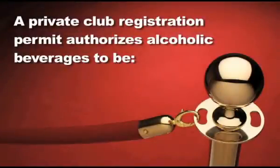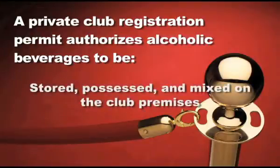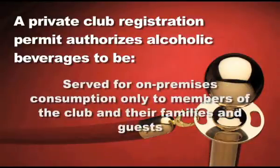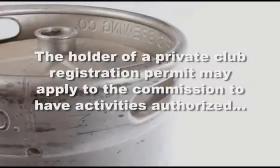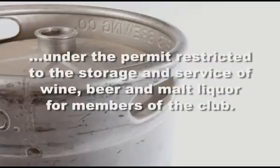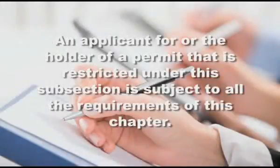Authorized Activities. A private club registration permit authorizes alcoholic beverages belonging to members of the club to be stored, possessed, and mixed on the club premises and served for on-premise consumption only to members of the club and their families and guests, by the drink or in a sealed, unsealed, or broken container of any legal size. An applicant for or the holder of a private club registration permit may apply to the Commission to have the activities authorized under the permit restricted to the storage and service of wine, beer, and malt liquor for members of the club. Except as otherwise provided by this chapter, an applicant for or the holder of a permit that is restricted under this subsection is subject to all the requirements of this chapter. The Commission may adopt rules as necessary to implement this subsection.